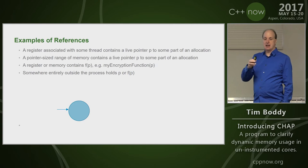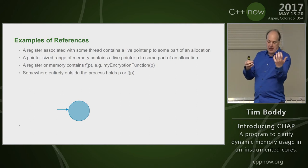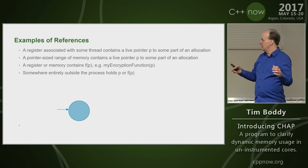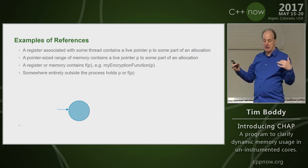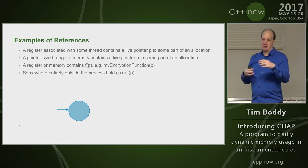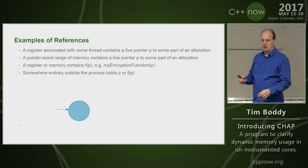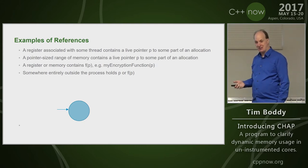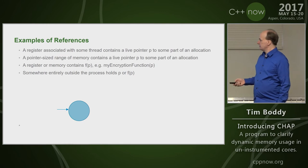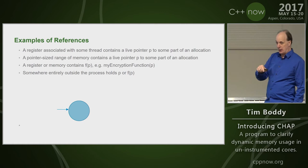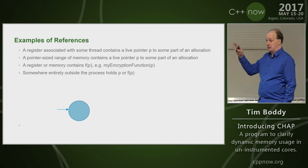An edge is used interchangeably with reference — a directional reference where the target of the edge is the referenced thing. If A refers to B, the edge goes from A to B. Some examples of references: a register containing a pointer to something within an allocation is the most straightforward. A pointer-size range of memory similarly has a pointer to some part of an allocation.